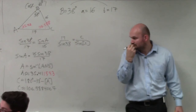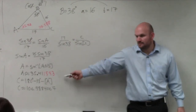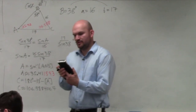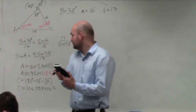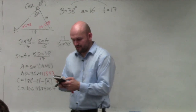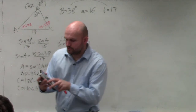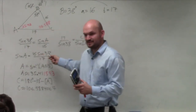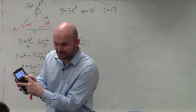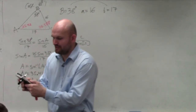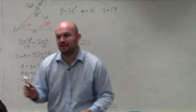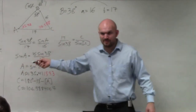A student asks how the C value was obtained. The teacher checks the calculator and finds the student stored the decimal value before taking the inverse — they stored sine of A rather than the angle A itself. The fix is to take the sine inverse of alpha A to get the actual angle. After correcting that, A is now properly stored. The teacher confirms: you need to take the inverse first, and then store that result.